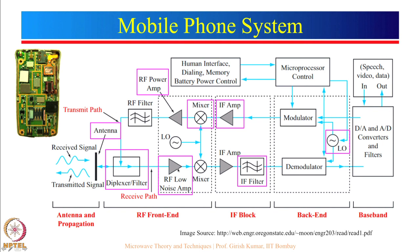The filtered signal comes to the RF low noise amplifier. After that it goes to the mixer; you can see there is a local oscillator, then it comes to the IF amplifier, there is an IF filter, and there is a demodulator. This block diagram looks very similar to what was shown before.